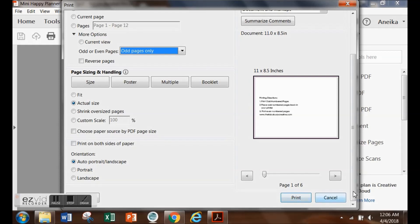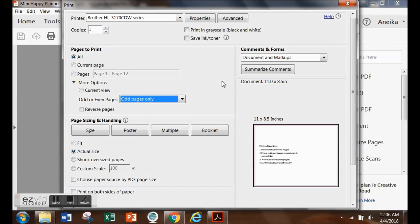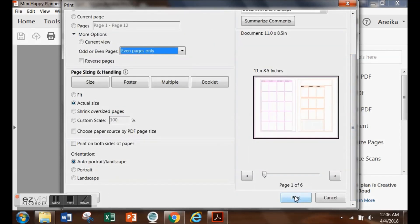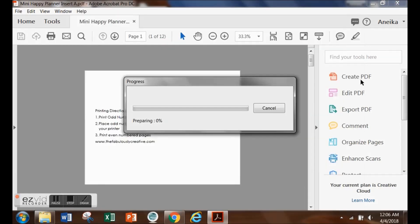Once those are printed out, you will take that entire stack, flip it over, put it back in your printer, and then select this option again. This time you want to print the even pages on the back of those other pages. You may have to do this two times just to figure out which direction the paper feeds in your printer, but that is pretty much it.